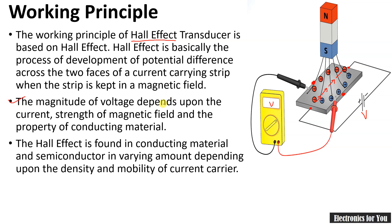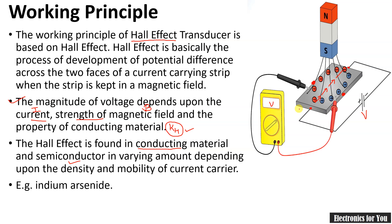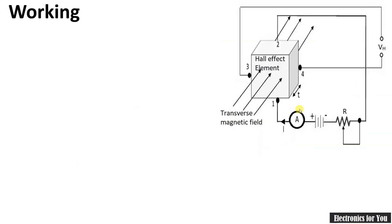The magnitude of this voltage depends on: the current I, the strength of the magnetic field B, and the property of the conducting material — a constant known as the Hall Effect constant K_H. The Hall Effect is found in conducting materials as well as in semiconductors. This strip can be a conducting material or a semiconductor such as Indium Arsenide, which can be used as a Hall Effect element.